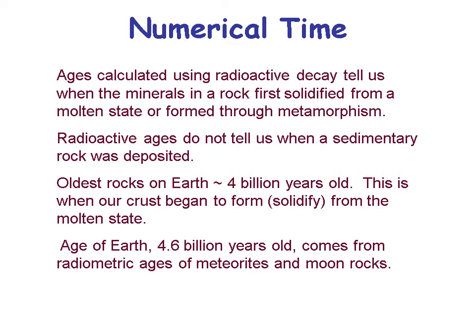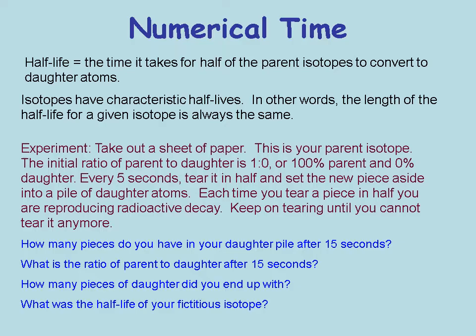The oldest rocks on Earth are 4 billion years old — this is when our crust began to form from a molten state. The age of the Earth is about 4.6 billion years, coming from radiometric ages of meteorites and moon rocks. An important term is half-life: the time it takes for half of the parent atoms to convert to daughter atoms, and then another half in the next interval. Isotopes have characteristic half-lives — the length of a half-life for a given isotope is always the same.